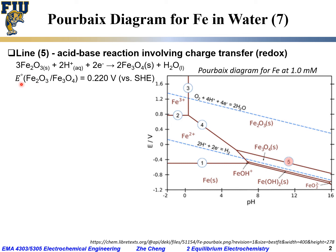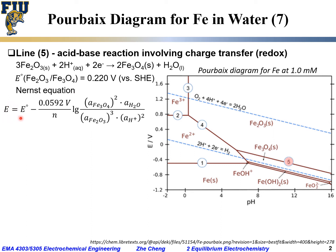From the standard electrode potential series, the standard electrode potential for Fe₂O₃/Fe₃O₄ is obtained from literature versus SHE. The Nernst equation then gives the electrode potential as: E₀ minus, at 25°C, 0.0592 V divided by n times the log of the activity of Fe₃O₄ raised to the power of 2, times water activity, divided by the activity of Fe₂O₃ raised to the power of 3, times the activity of proton raised to the power of 2.